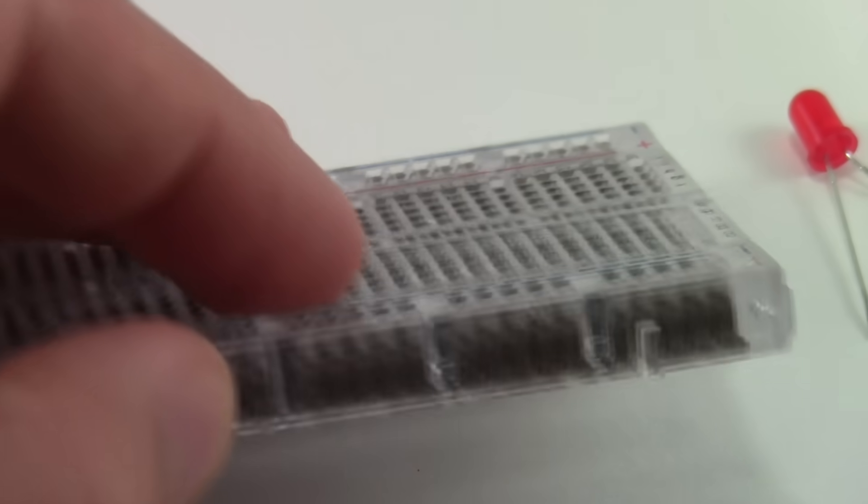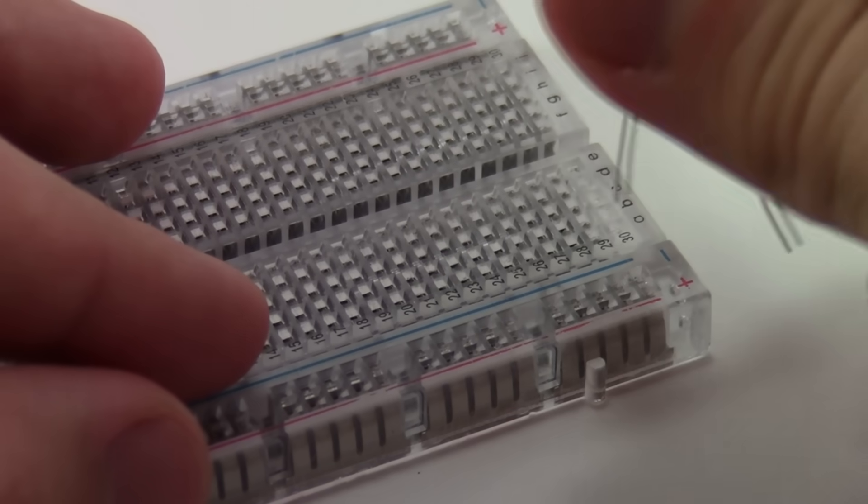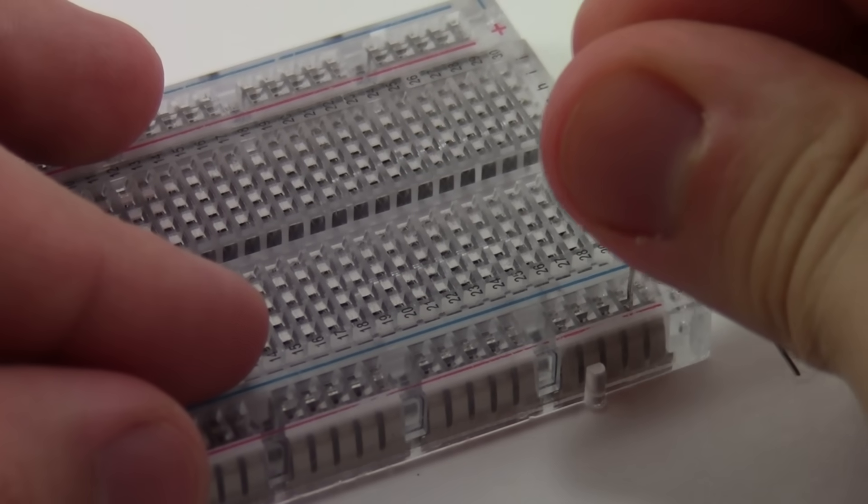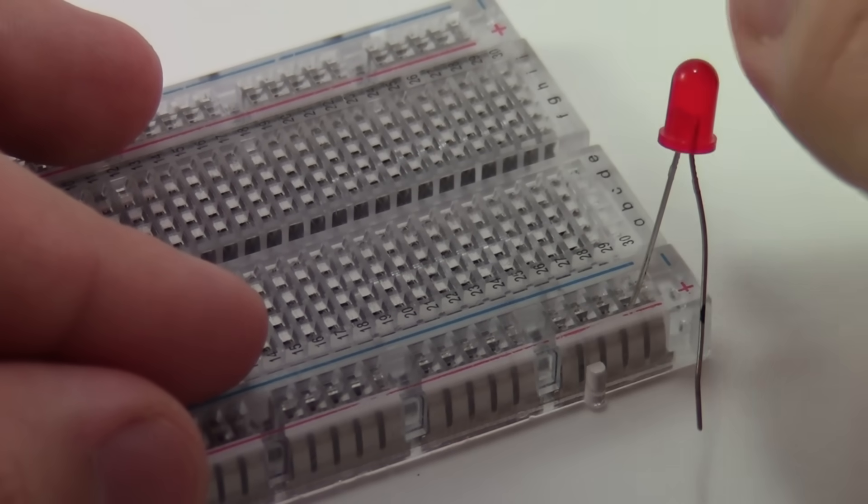This breadboard is actually made from transparent plastic, so you can see the clips from the outside. When you press a lead into one of the holes, it's just getting grabbed onto by one of these clips.